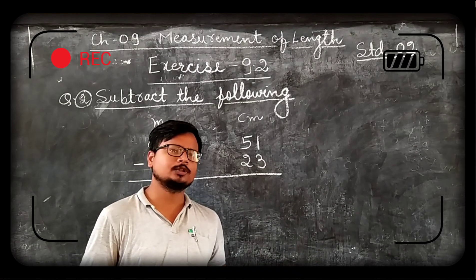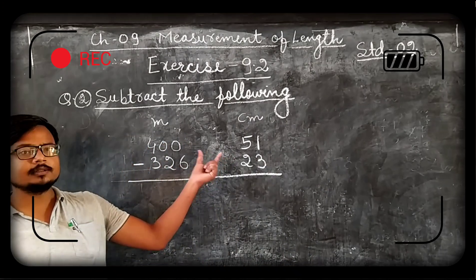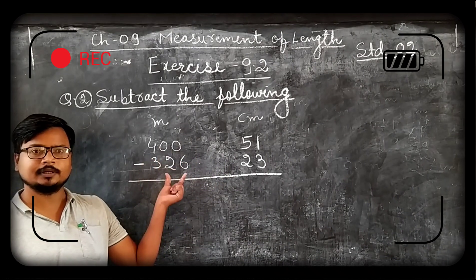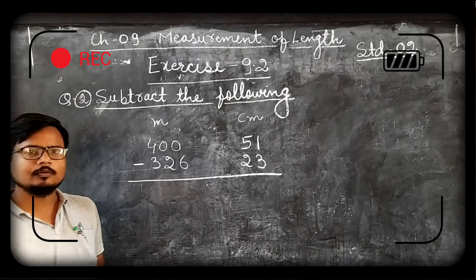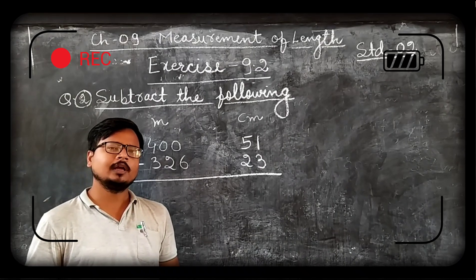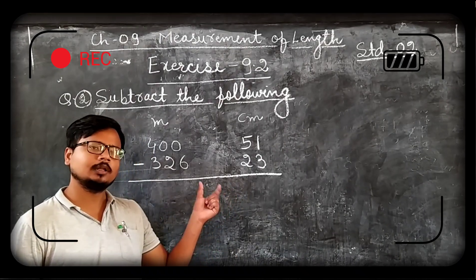Now let us move to next question. As you can see here these are 3 digit numbers. In meter it is given 3 digits number. Now let us solve same way. We have to solve this question in the same way.